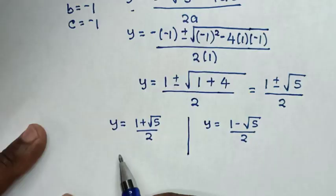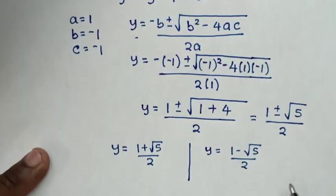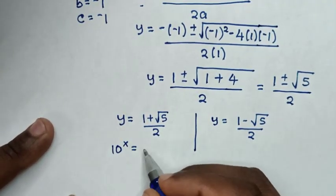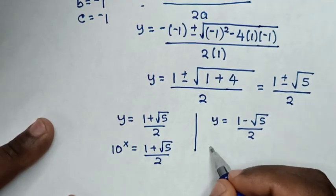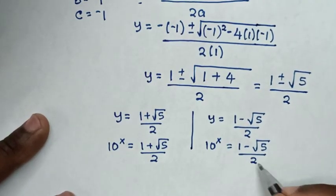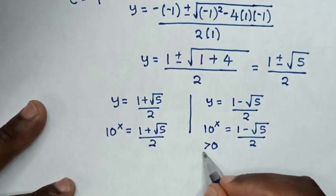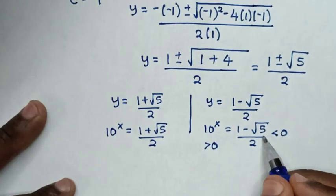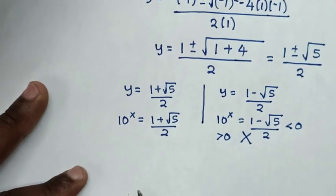Recalling that y equals 10 to the power of x, we substitute back: 10 to the power of x equals (1 + √5) / 2, and 10 to the power of x equals (1 − √5) / 2. But 10 to the power of x is always greater than 0, and (1 − √5) / 2 is less than 0, so the second solution is rejected.